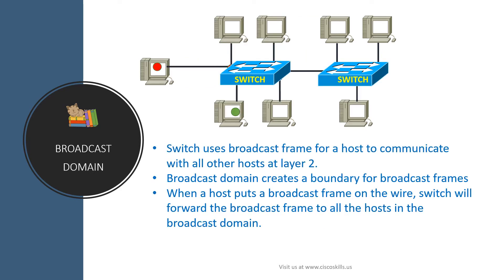A switch uses broadcast frames for a host to communicate with all other hosts at layer 2, and a broadcast domain creates a boundary for broadcast frames. In this network we can create two broadcast domains — this is one broadcast domain and this is another. When a host puts a broadcast frame on the wire, the switch will forward the broadcast frame to all other hosts in the same broadcast domain.